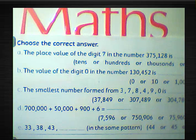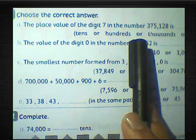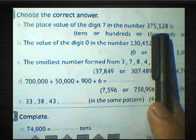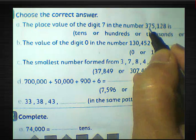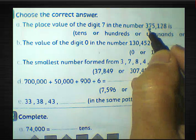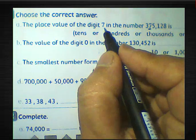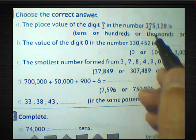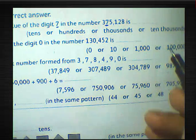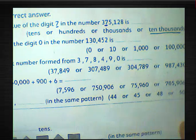Look at question number one, choose the correct answer. The place value of the digit 7 in the number 375,128 is — 7 lies in the ten-thousands place, and 5 lies in ten-thousands. So we must choose 10,000 and underline the correct answer.